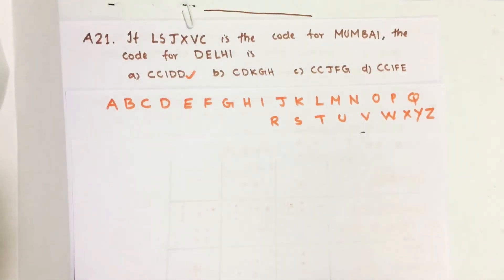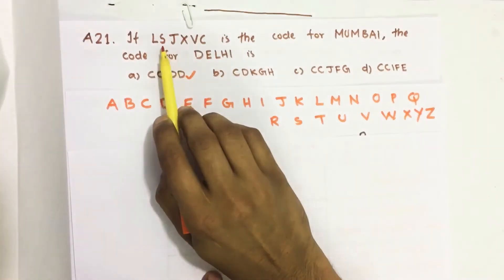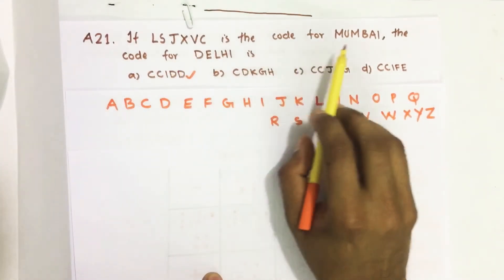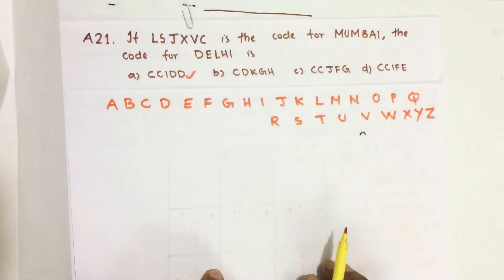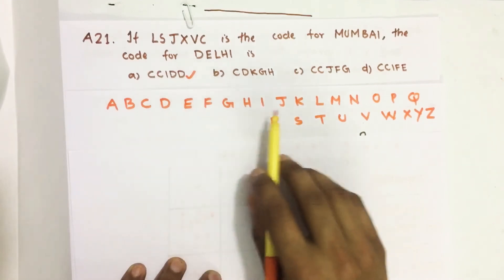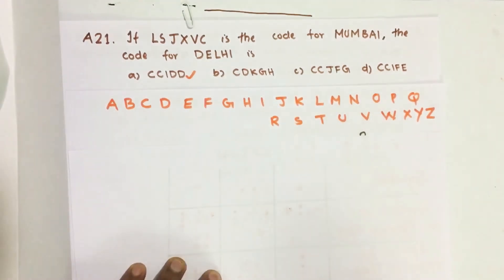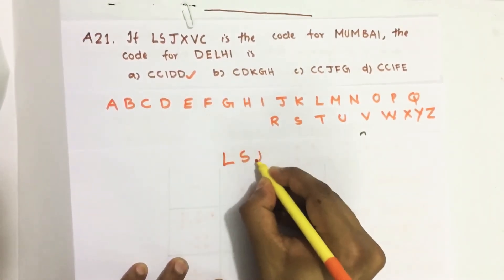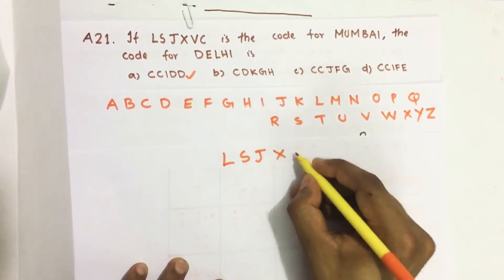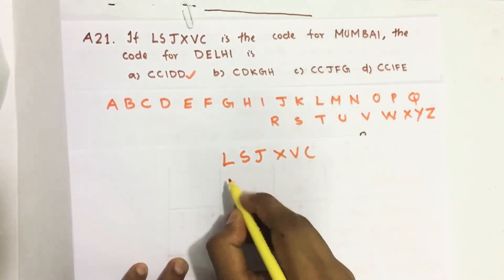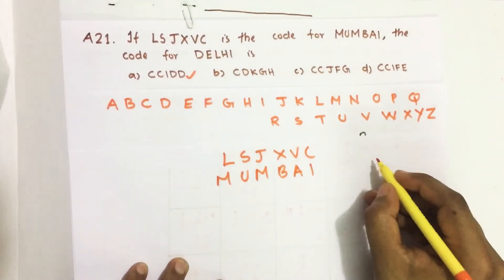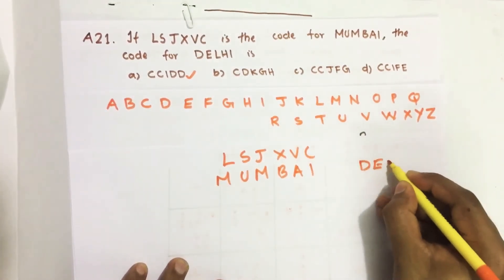Hello everyone. Here I am going to solve the 2018 seaside question number 21 from question paper series A. The question states: if L, S, J, X, V, C is the code for Mumbai, then what is the code for Delhi?